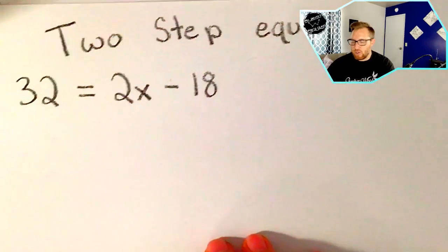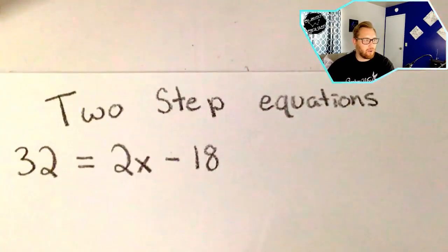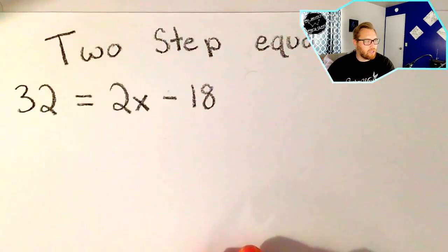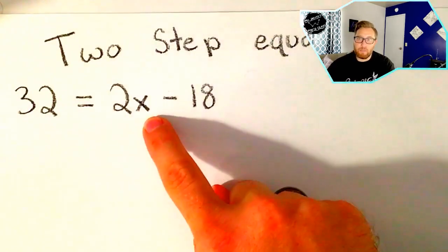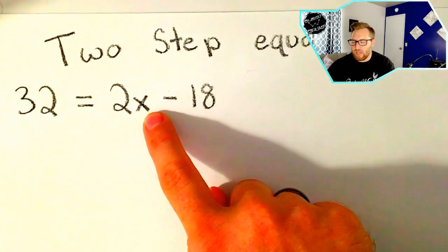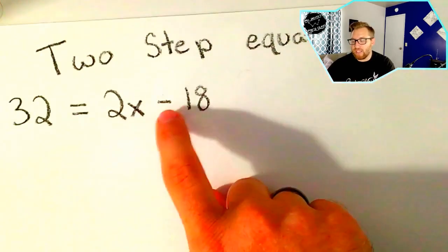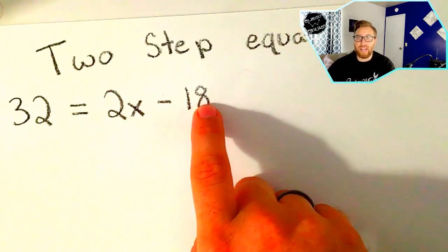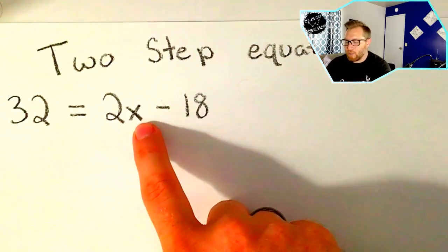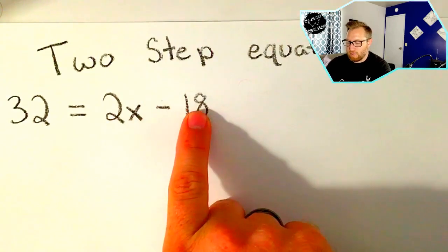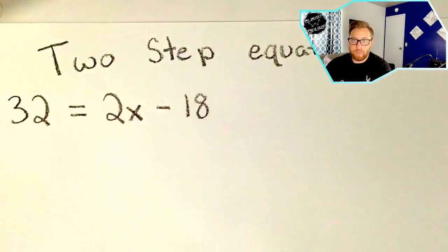So again, we are solving two-step equations. This problem says 32 equals 2x minus 18. What we're really trying to say is that some number for x, when multiplied by 2 and then subtracted by 18, will end up being 32. We don't know what that number is yet. Some number, if we multiply it by 2 and subtract 18, will give us 32. We need to find out what that number is.